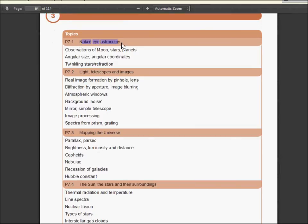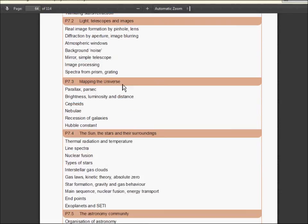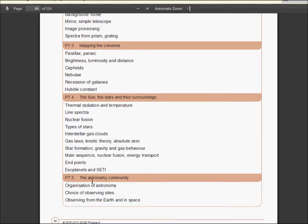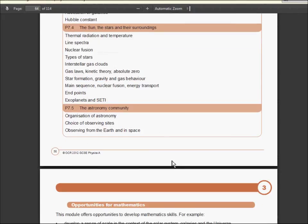So I suggest you have a look at this. It's got an introduction to the unit, some general information about why OCR feel it's important, what it contains, and what it's about. And it breaks them up into topics - so the four main topics: naked eye astronomy, light telescopes and images, mapping the universe, the sun, stars community, and then also a little extra about the astronomy community and looking at how astronomers all work together.